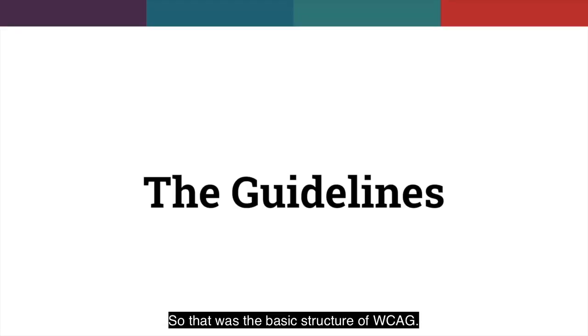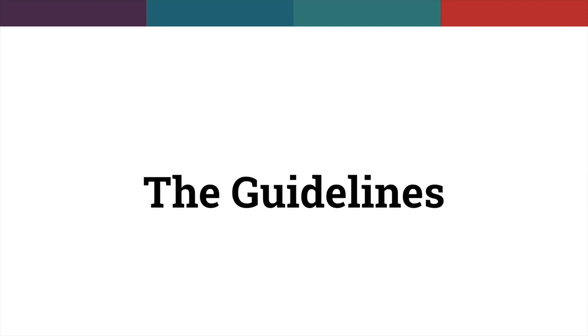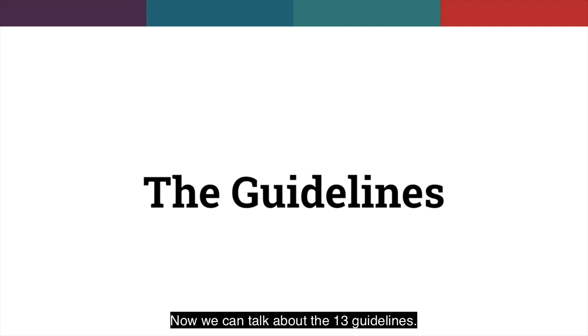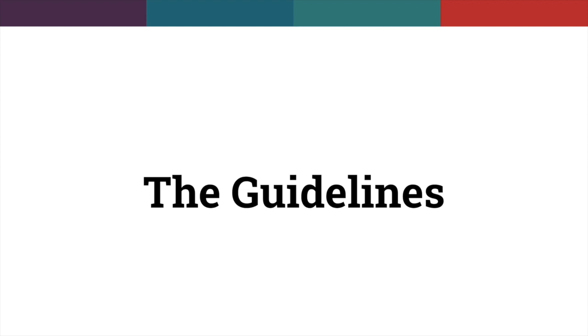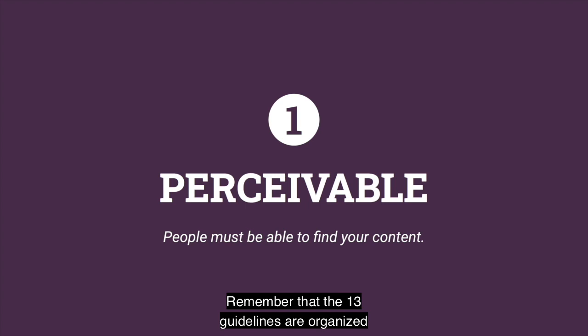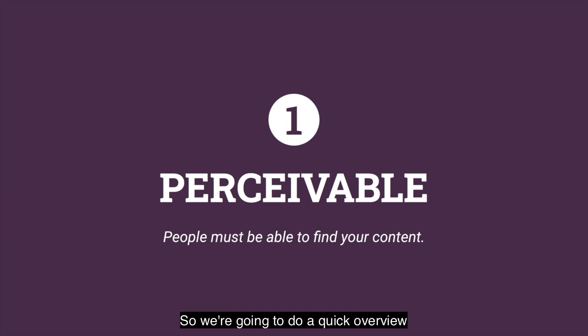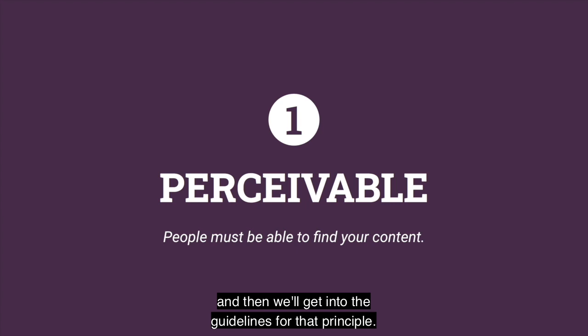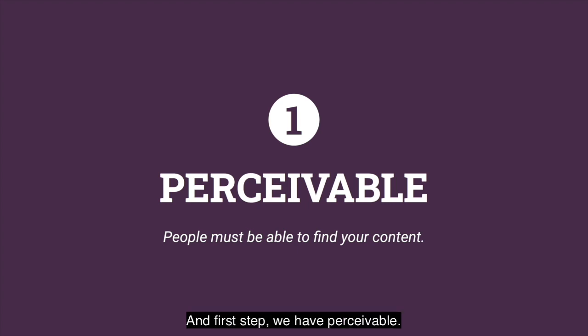So that was the basic structure of WCAG. Now we can talk about the 13 guidelines. Remember that the 13 guidelines are organized into the four principles. So we're going to do a quick overview of what the principle means and then get into the guidelines for that principle. First up, we have perceivable.